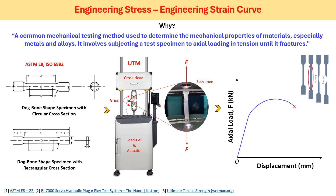Once we load the specimen on the grips, by using the load cell we apply a strain to the material, and for a given strain rate the material keeps stretching. At this phenomena, the material is basically experiencing a certain amount of load or stress, which we are measuring on the axial load versus displacement plot. This plot is basically known as the flow curve and behavior of material.